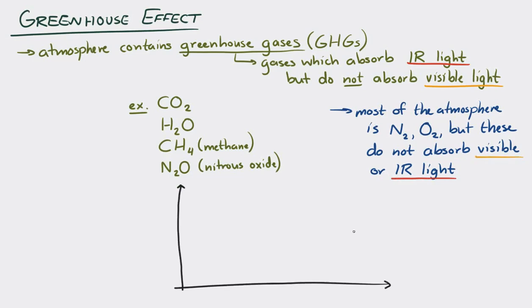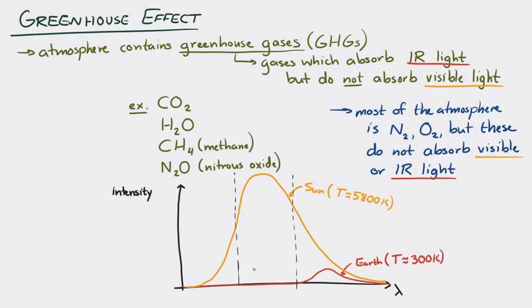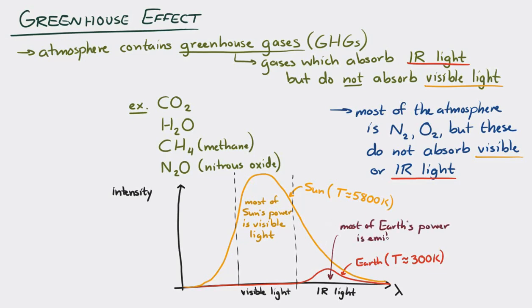Let's look at the black body curves for the Sun and the Earth. The Sun is at a very high temperature — about 5800 Kelvin on its surface — and emits the vast majority of its power as visible light. The Earth has a temperature of about 300 Kelvin on its surface and therefore emits most of its power as infrared light.